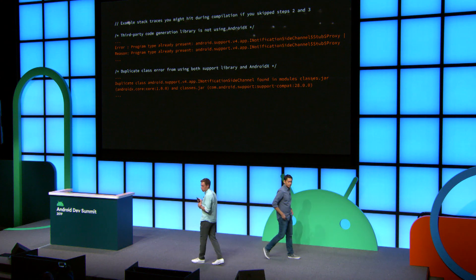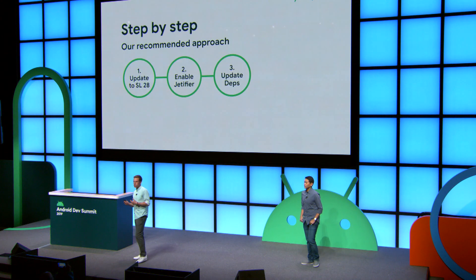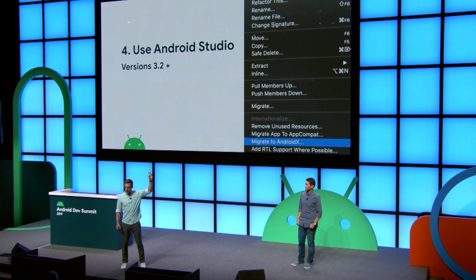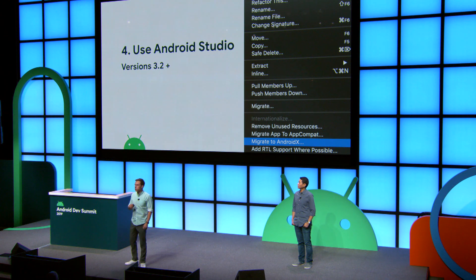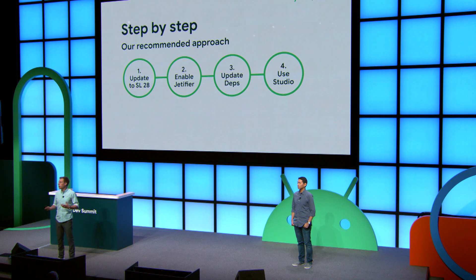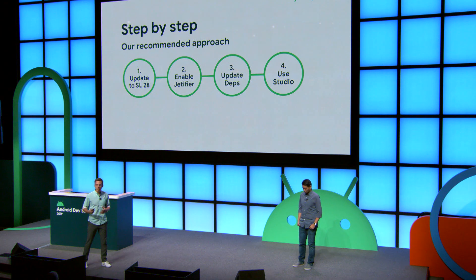Now we're going to talk about the actual source code. We've got Support Library 28, enabled Jettifier, and our dependencies in order. As of Studio 3.2 stable and above, there is a Migrate to AndroidX button under the Refactor menu. What that will do is migrate your source code, and this will work for a majority of cases. However, some teams may not use Studio, or there are more sophisticated app architectures that the tooling can't exactly automate.